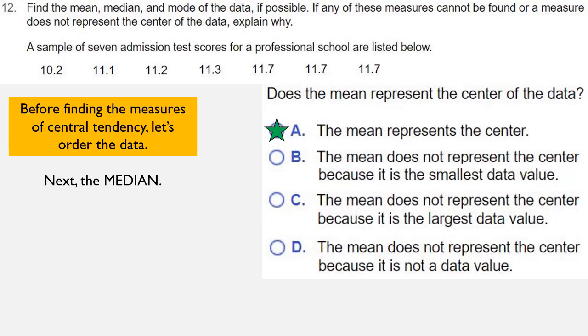Here we have an odd number of entries. So if I underlined the 3 entries on the left and the 3 entries on the right, there's one central entry left in the middle, which is 11.3. That's our median.